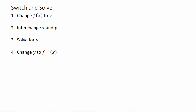In this video we're going to look at finding the inverse of logarithmic functions using the switch and solve method. The first thing we do is change f(x) to y, then we swap the x's and y's — everywhere there's a y, that becomes an x and the x's become y's. Then we solve for y, and after we solve for y, we change y to the f-inverse symbol.